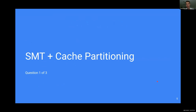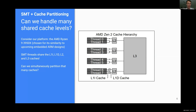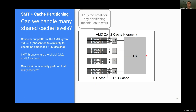First, SMT and cache partitioning. The key problem is handling many shared cache levels. I've shown a simplified illustration of the processor used in our experiments, the AMD Ryzen 9 3950X — similar in some ways to embedded ARM designs we think are coming. Key to notice: there are four cores each with two threads; however, the two threads share three different cache levels — the L1, L2, and L3. Previous multi-core work dealing with hardware partitioning only had a shared last-level cache and didn't have to deal with these multiple levels. The L1 is just too small for any partitioning technique to work — neither way partitioning nor cache coloring.